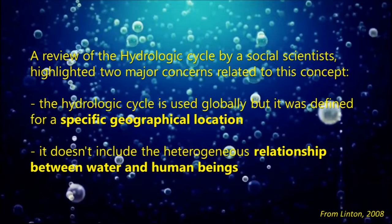A review of the hydrologic cycle by social scientists highlighted two major concerns related to this concept. One, the hydrologic cycle is used globally but it was defined for a specific geographical location. And two, it doesn't include the heterogeneous relationship between water and human beings.